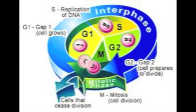Interphase consists of G1, S, and G2 phases. In G1, the cell grows and synthesizes proteins. The S phase is when DNA is replicated. During the G2 phase, the cell continues to grow and the cell's organelles replicate in preparation for the mitotic or M phase.